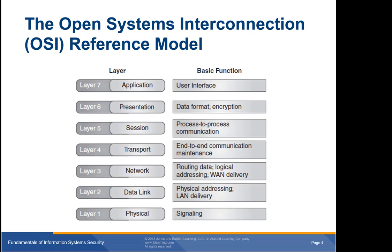This figure shows each layer of the OSI reference model. First, layer seven is the application layer. This layer is responsible for interacting with end users. The application layer includes all programs on the computer that interact with the network. For example, your email software is included since it must transmit and receive messages over the network. A simple game like Solitaire doesn't fit here because it does not require the network.